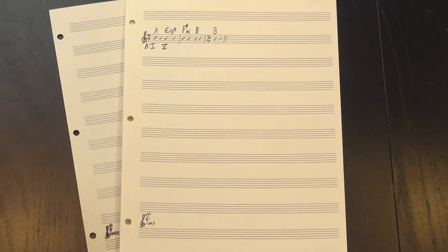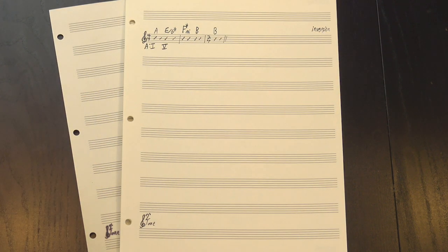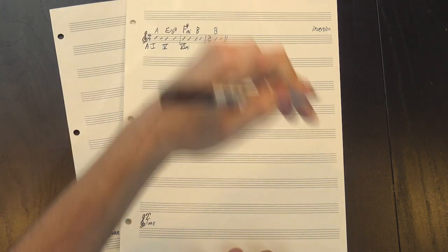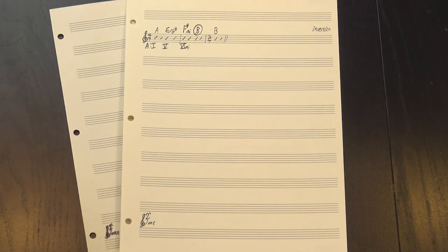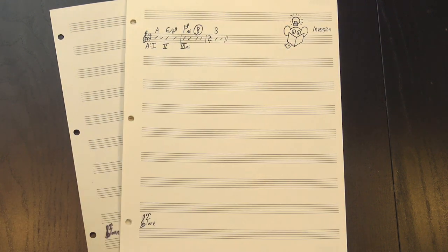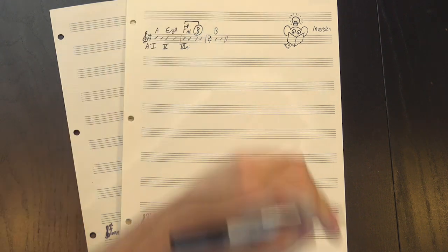let's look at the next section. Here we have the I chord, then the V chord, which is, again, in an inversion, then another deceptive resolution to the VI minor, and then... that B major again. Alright, let's talk about it.